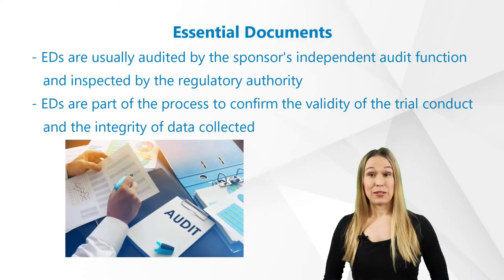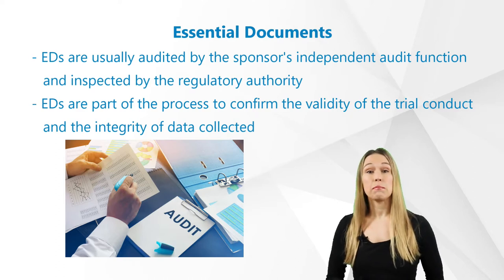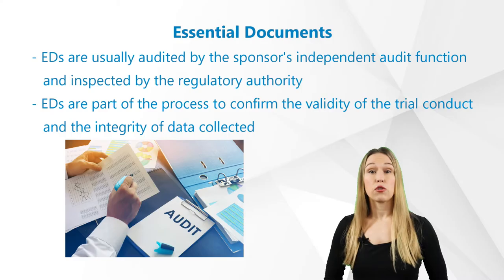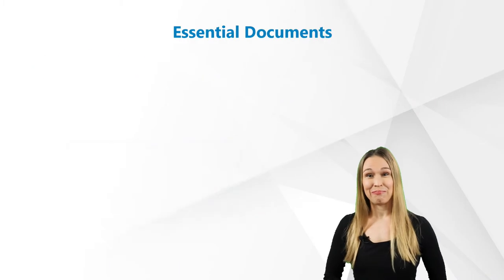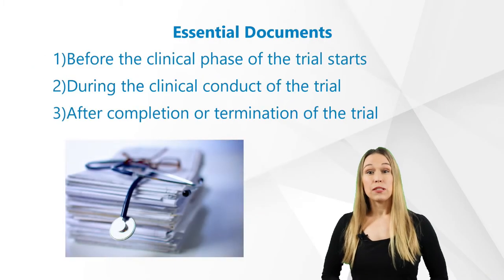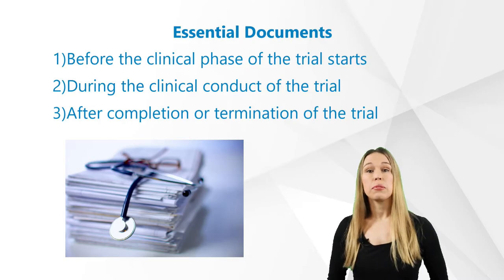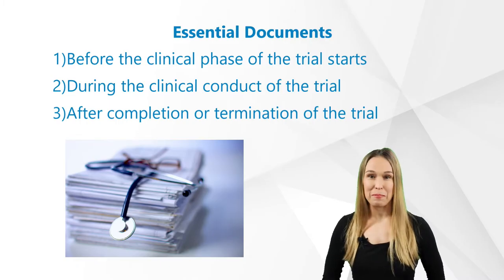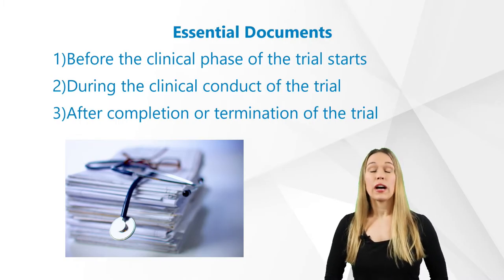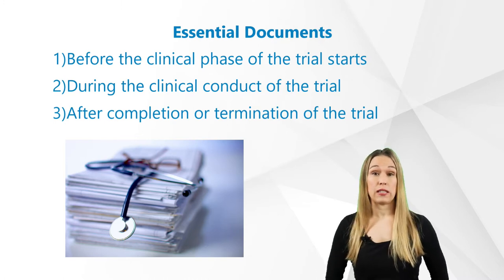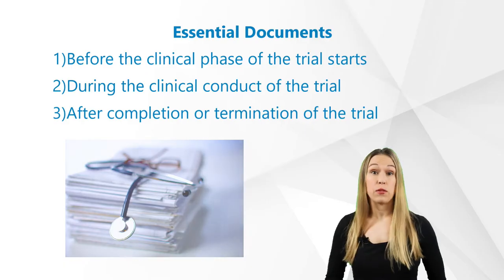These documents are also the ones which are usually audited by the sponsor's independent audit function and inspected by the regulatory authority or authorities as part of the process to confirm the validity of the trial conduct and the integrity of data collected. Essential documents are grouped into three sections: section one is before the clinical phase of the trial starts, two during the clinical conduct of the trial, and three after completion or termination of the trial. You should also know whether the document should be filed in the investigator institution ISF or the sponsor file TMF, or both.